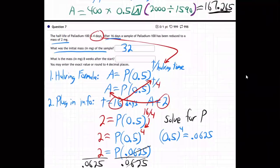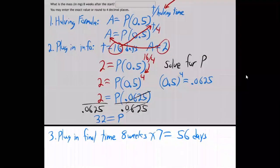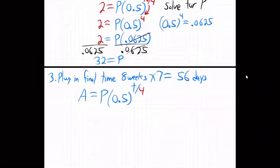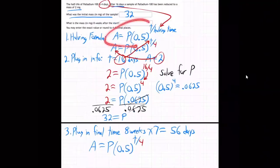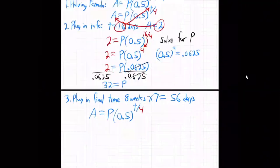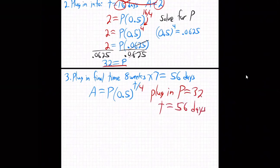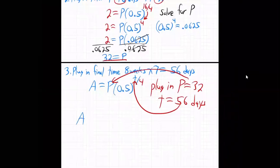They're asking what's the mass going to be 8 weeks, which is 56 days later. So let's write the formula again: A equals P times 0.5 to the T over 4. Now let's plug in. We've learned what P is. Plug in P, 32, and time, 56 days. 32 is the starting amount, 56 is the time. 56 days later, we want to know how much is left.